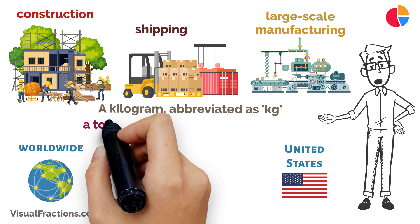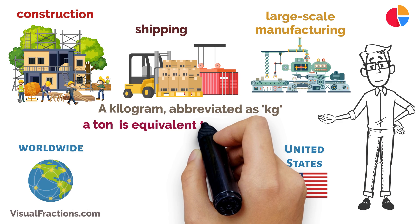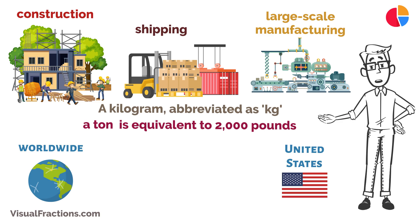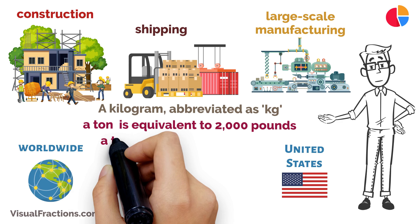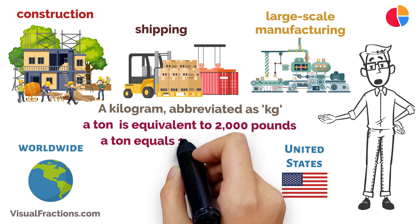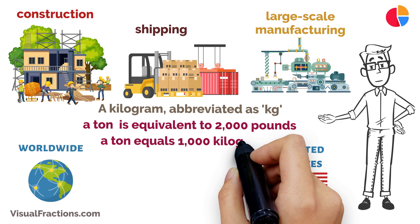In the United States, a ton, also known as a short ton, is equivalent to 2,000 pounds. While in most other countries, a ton, also referred to as a metric ton, equals 1,000 kilograms.